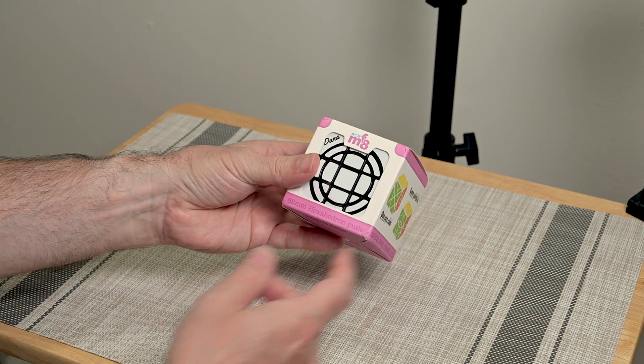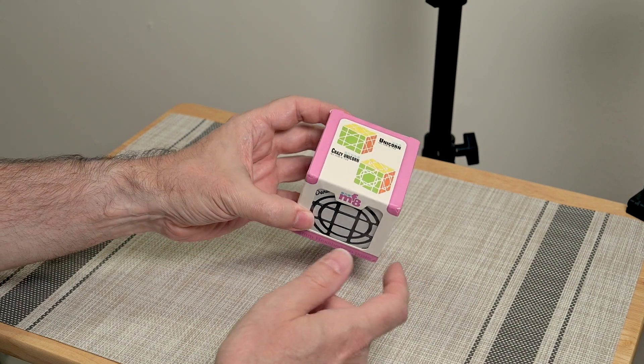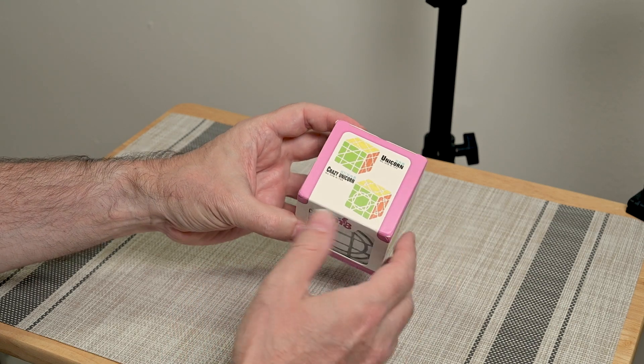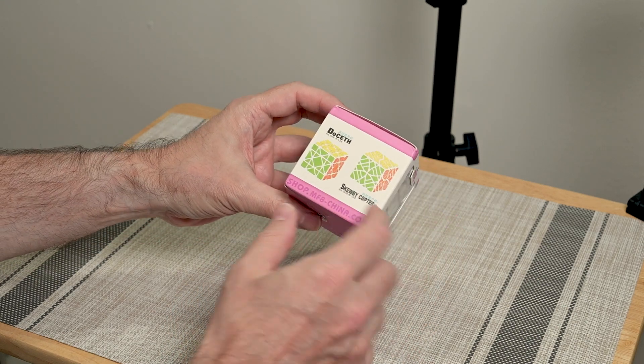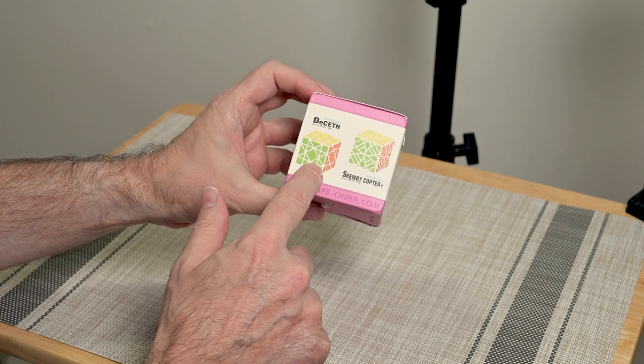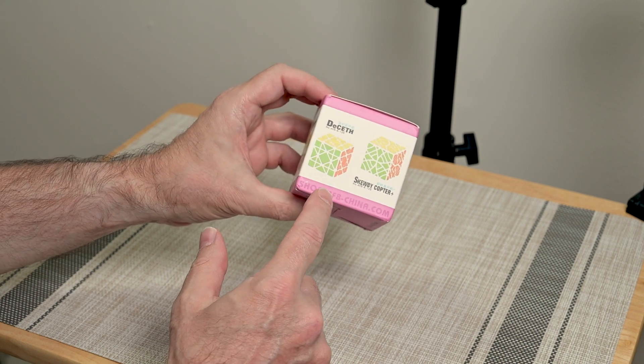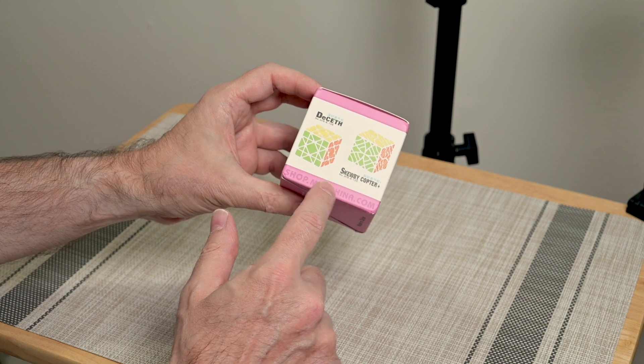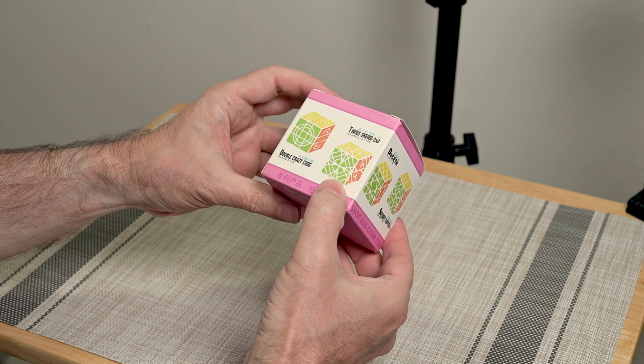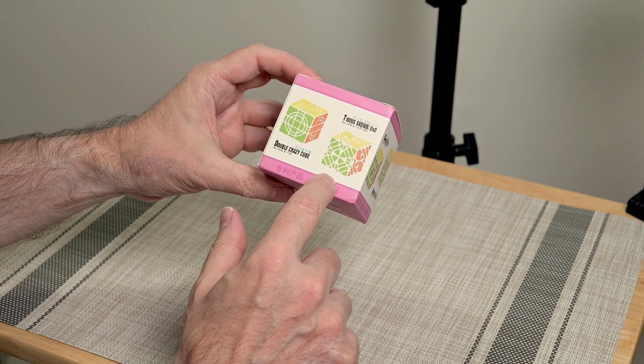And here we go. So we see the puzzle kind of peeping through here. Nice MF8. And you see it has a crazy unicorn. It's not that. Ooh, D-Seth. Ooh, that hasn't been released yet, has it? That's interesting. I remember that being announced, and I haven't seen it. The Scooby Copter Plus, which is really kind of fun. Ooh, Twins Cube, 2x2.